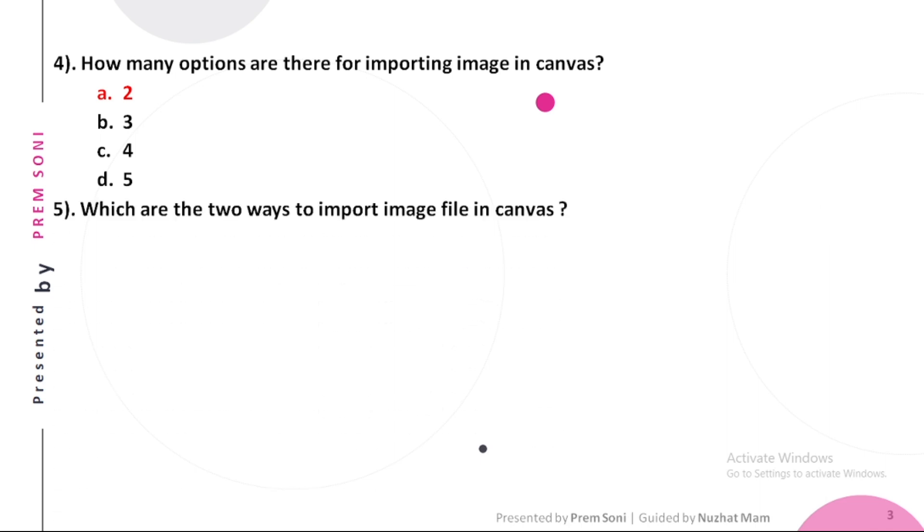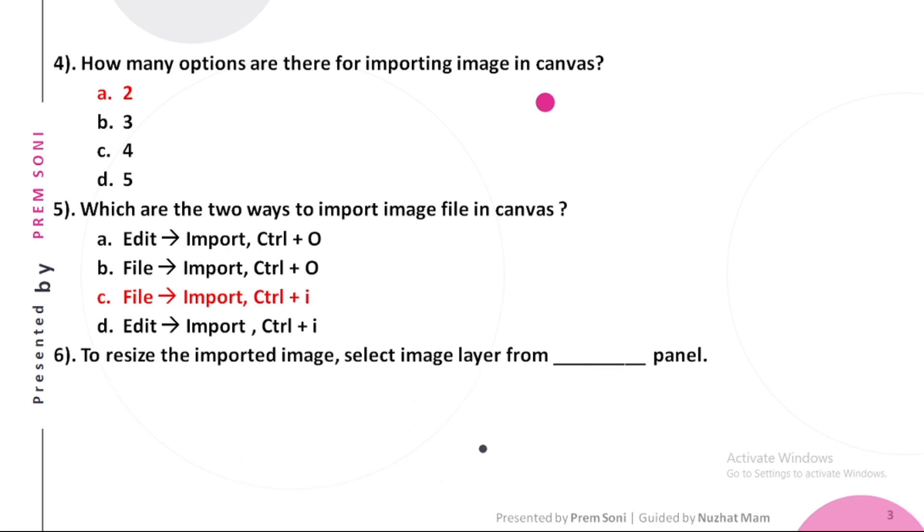Fifth, which are the two ways to import image file in Canvas? Options are: a. Edit import ctrl plus o, b. File import ctrl plus o, c. File import ctrl plus i, d. Edit import ctrl plus i. The answer is file import ctrl plus i. Sixth, to resize the imported image, select image layer from dash panel. Options are: a. Params, b. Tool Options, c. Navigator, d. Layer. The answer is Layer.